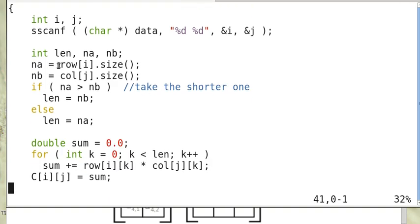So this is to calculate the dot product. Basically we sum over the product of the elements. So here is row[i][k] times col[j][k], sum over k.